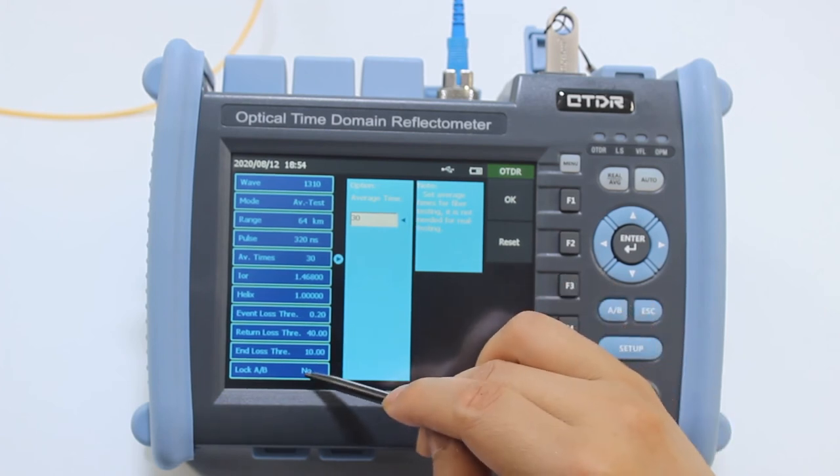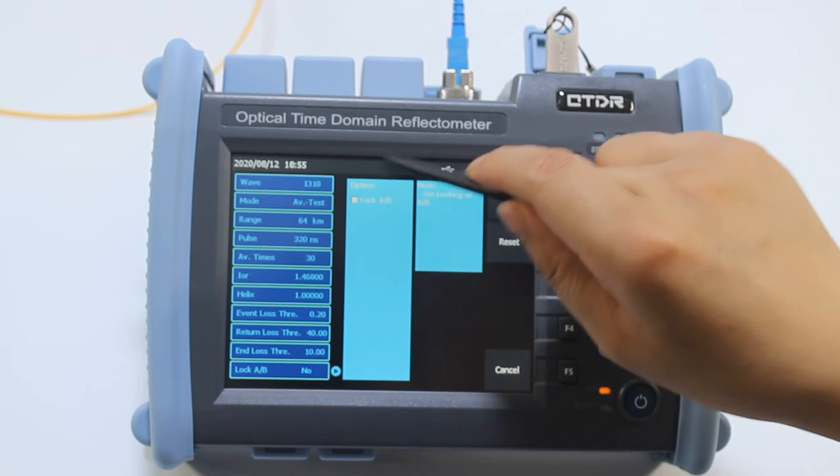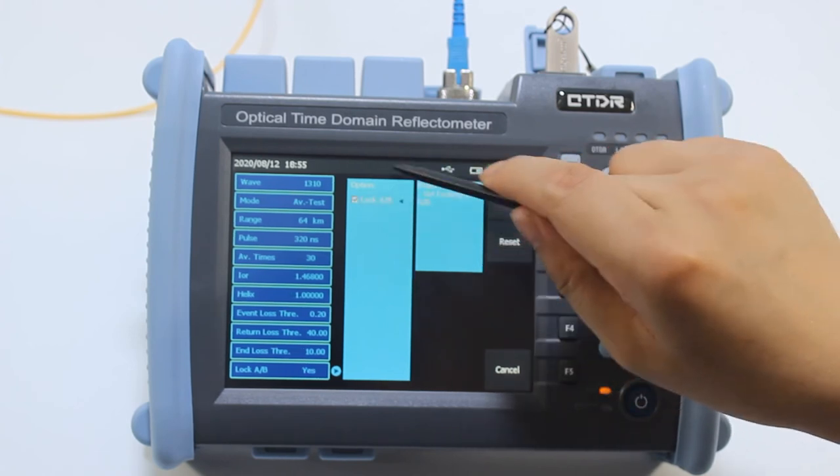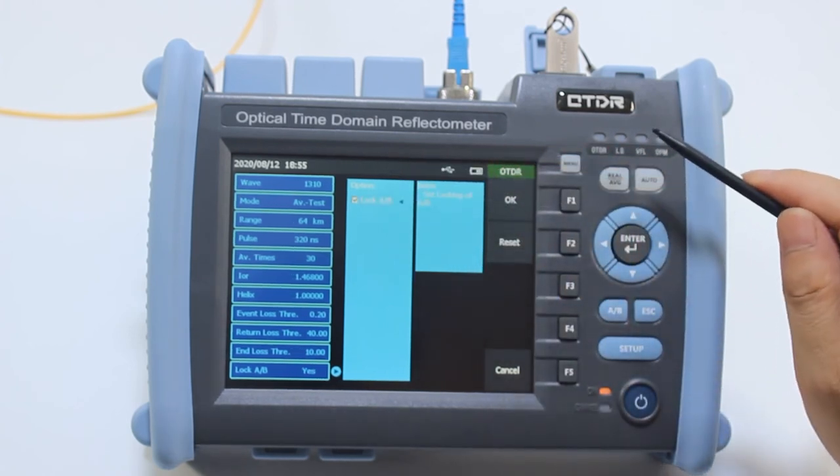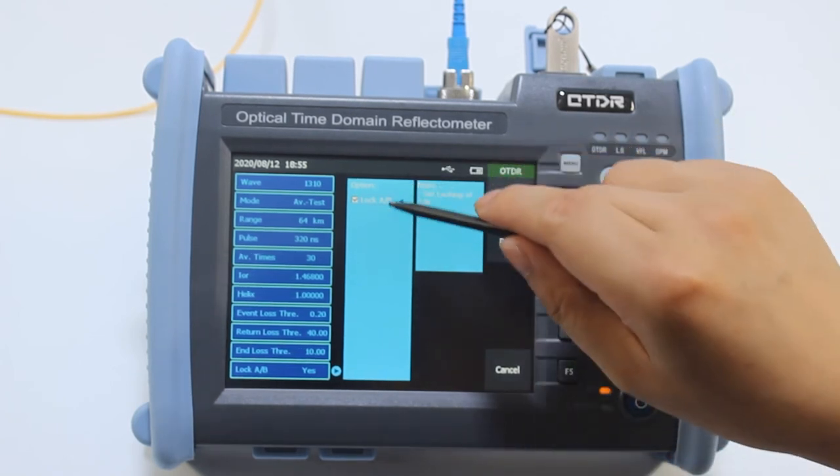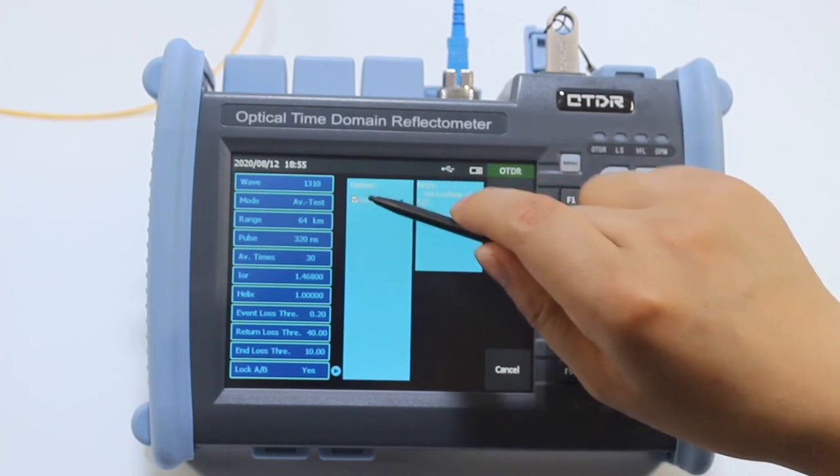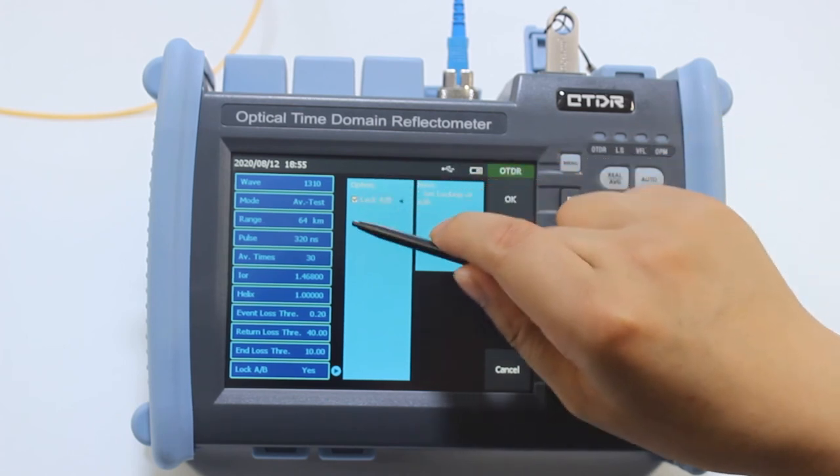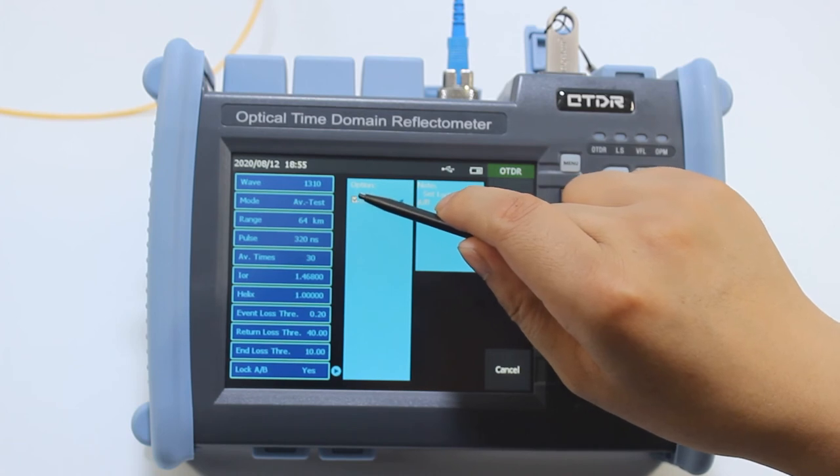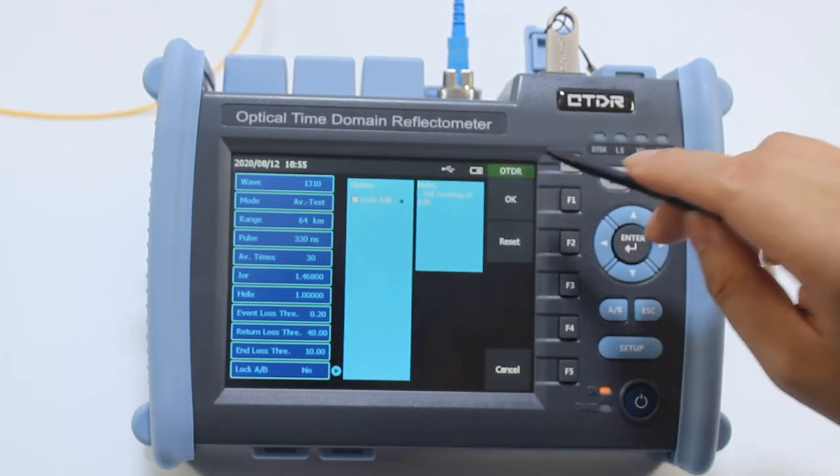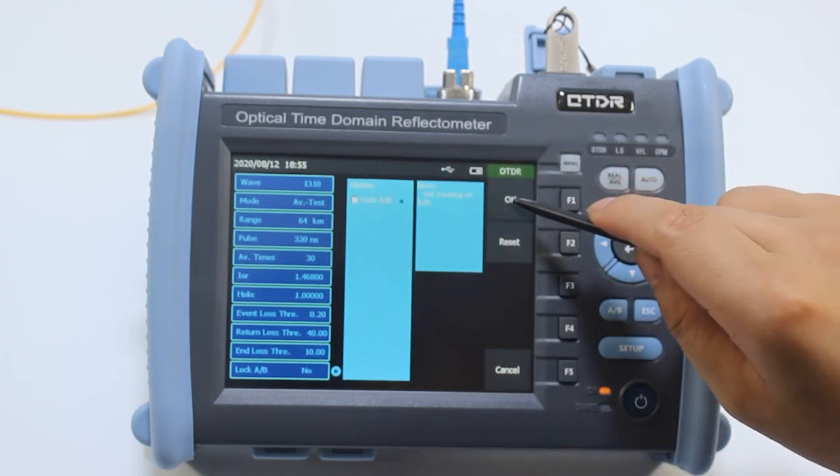For lock A and B, if we select lock A and B, it means we can move cursor A and B at the same time. If we do not need it, we do not select it. Click OK to confirm the setting.